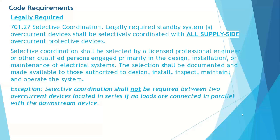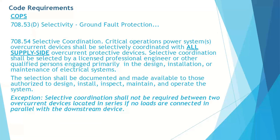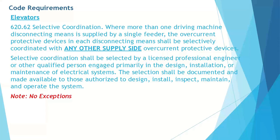In 701.27 with legally required systems, we see all supply side devices. I want to point out that the exception here states that selective coordination shall not be required between two overcurrent devices located in series with no loads connected in parallel downstream. An example of this would be an upstream feeder breaker to a downstream main breaker. Those two would be in series without any parallel loads. Or a primary side branch breaker that is feeding a transformer and then a secondary main breaker on the downstream panel. We will see an example of this later on.